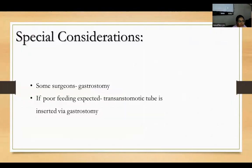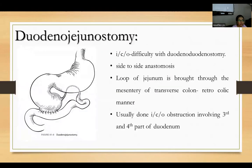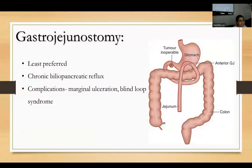Some surgeons prefer gastrostomy; if prolonged feeding is expected, a trans-anastomotic tube is inserted via gastrostomy. For duodenojejunostomy, done when duodenoduodenostomy is difficult, side-to-side anastomosis is performed with a loop of jejunum brought through the mesentery of the transverse colon in a retrocolic manner, usually for obstruction involving the third and fourth part of the duodenum. Gastrojejunostomy is least preferred as it results in chronic biliopancreatic reflux, marginal ulceration, and blind loop syndrome.